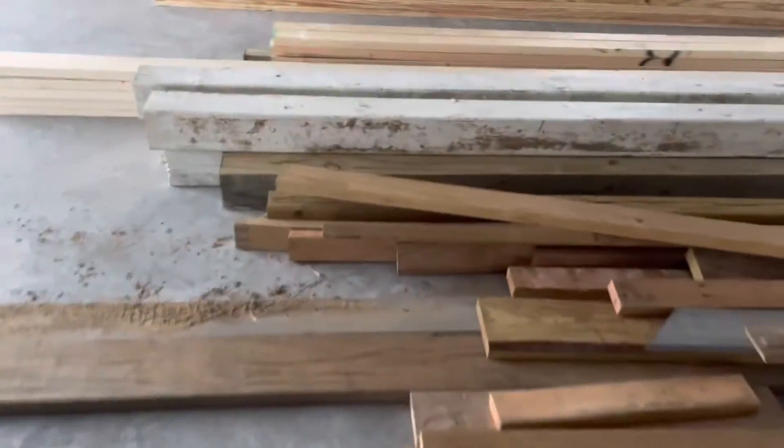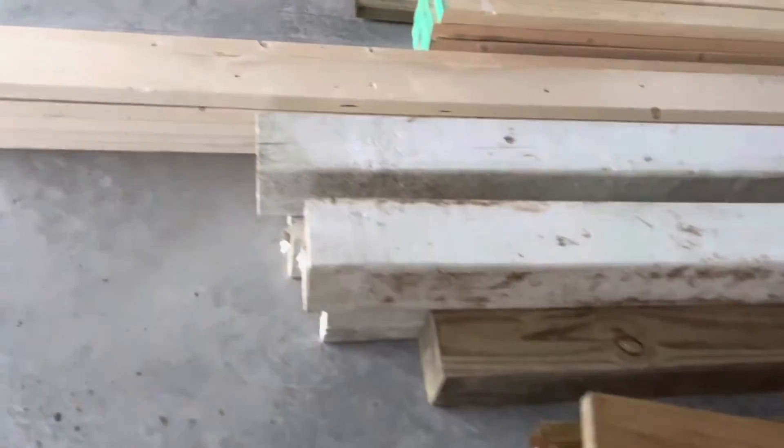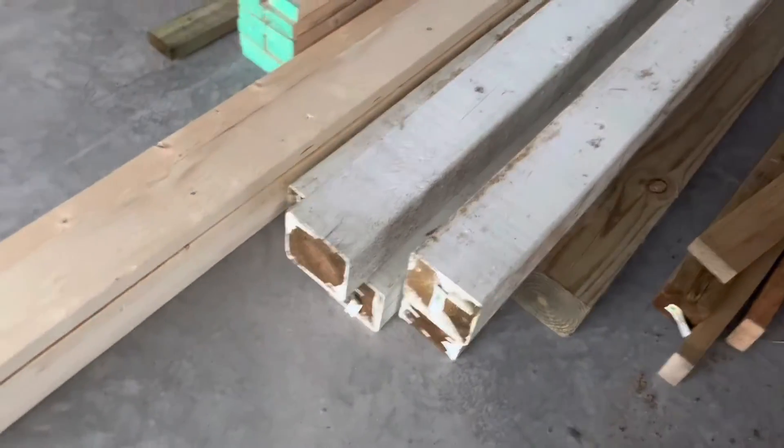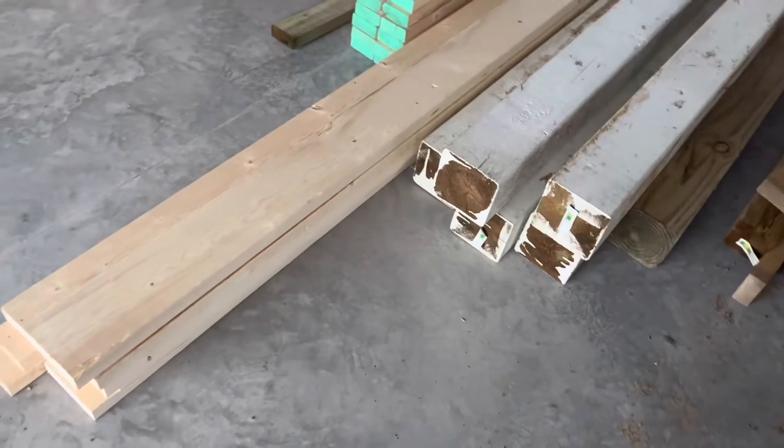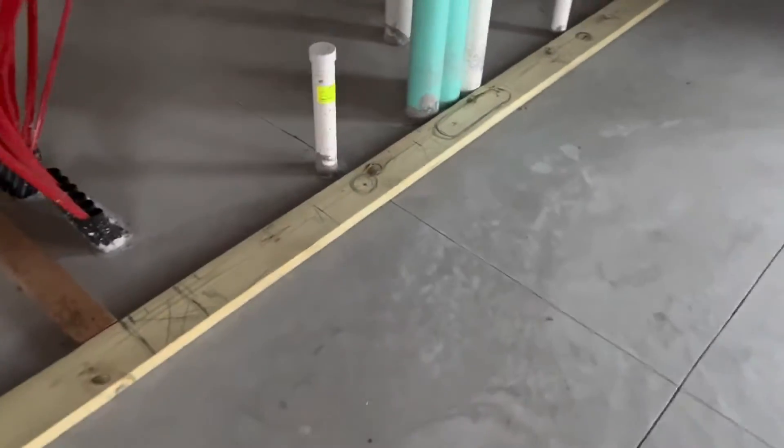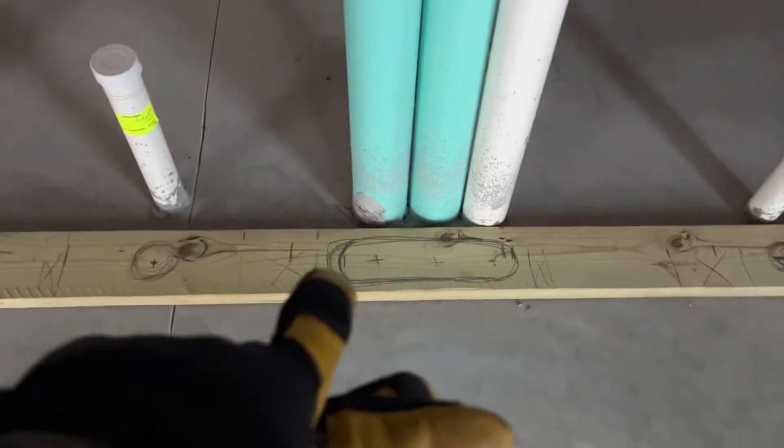Good thing you asked. The big giant Xs are for these big giant six-by-sixes, which are going to carry the majority of the weight. The rectangular Xs are for the two-by-sixes, which are just there to stop it from wobbling. This bad boy is going to have five six-by-sixes carrying the weight.